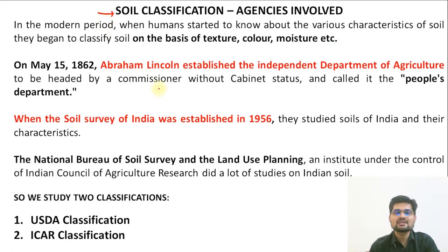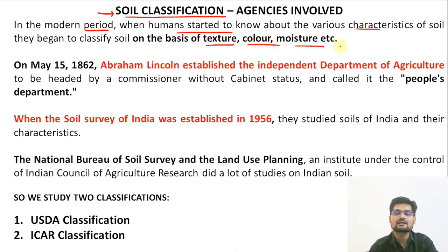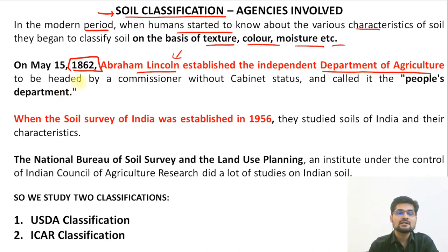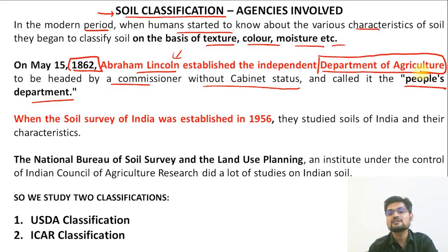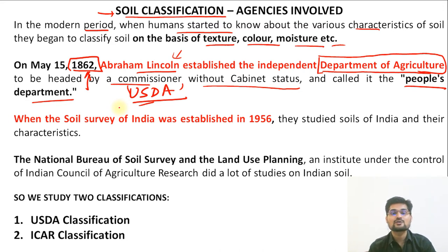Coming to the most important part — soil classification. In 1862, Abraham Lincoln, the American president, established an independent department of agriculture called the 'people's department.' This became what we know as the United States Department of Agriculture — USDA. Right from 1862, it started the classification of soil not only at the United States level but also at the world level.